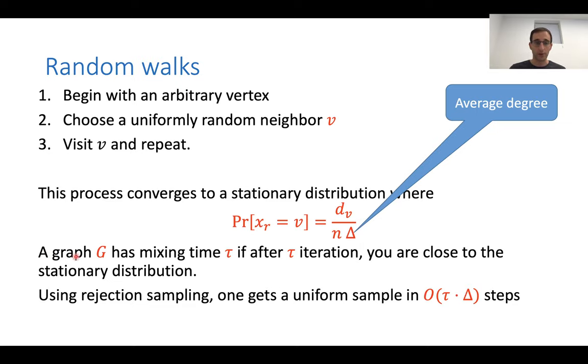And so, what is the mixing time? So, graph G has a mixing time tau. If after T iterations, you are close in statistical distance to the stationary distribution. So, after T tau steps, I'm some constant, let's say, one over four distance from the stationary distribution. The constants do not really matter. You can do a few more additional steps. And this grows exponentially close to the stationary distribution.